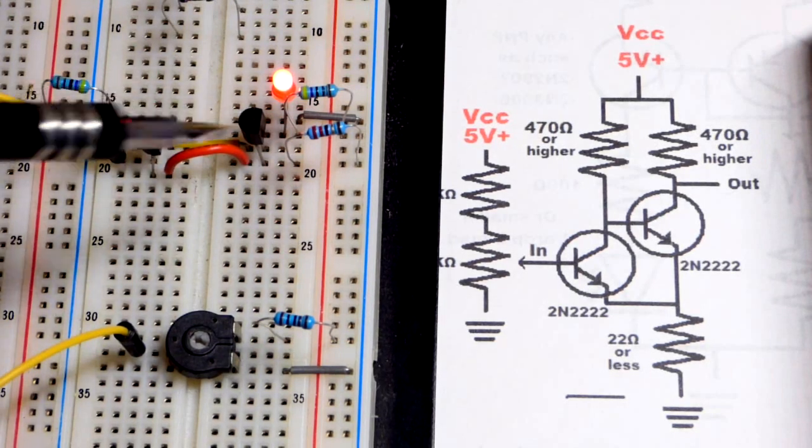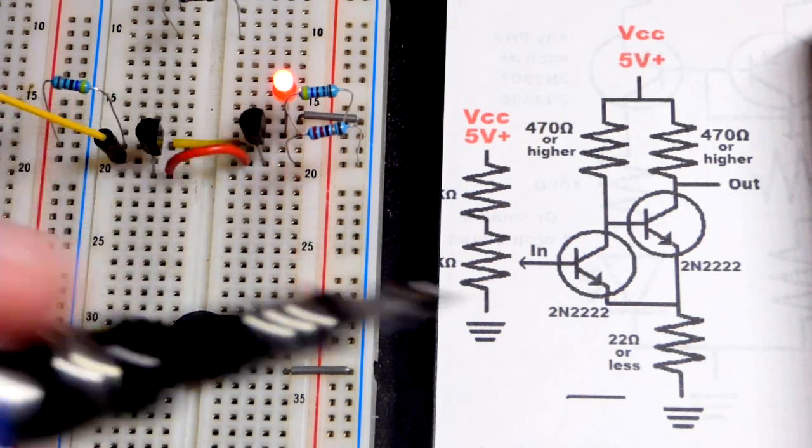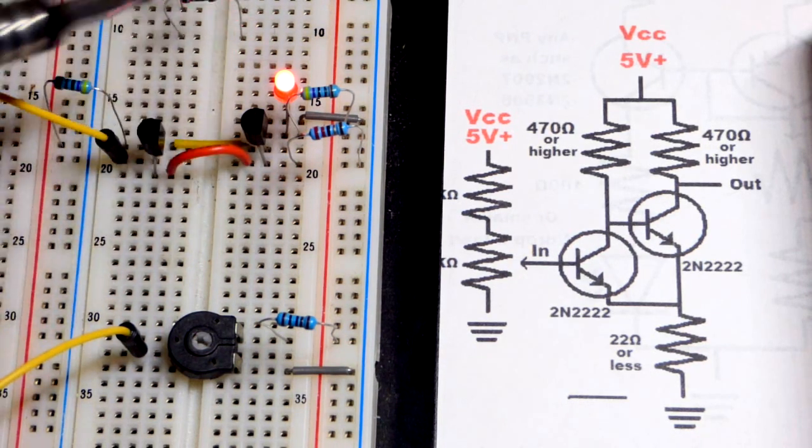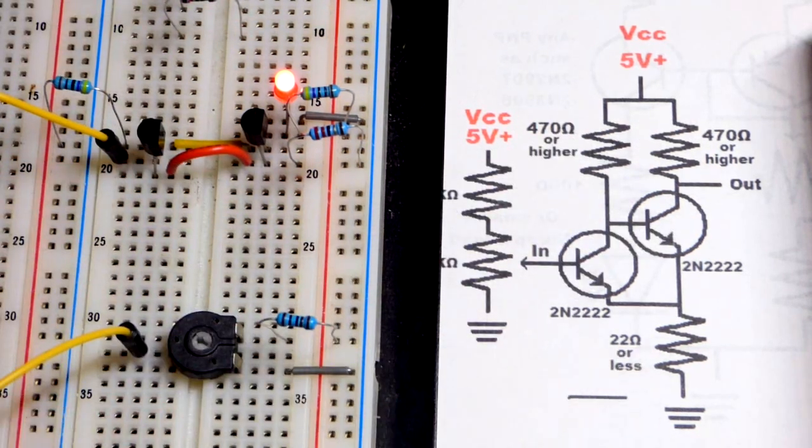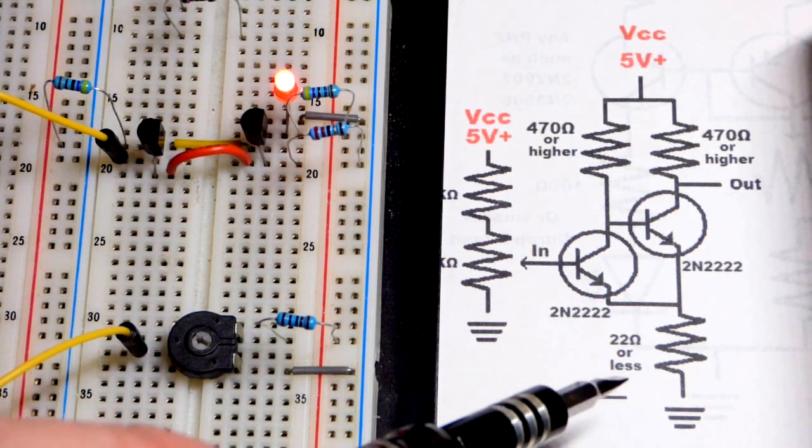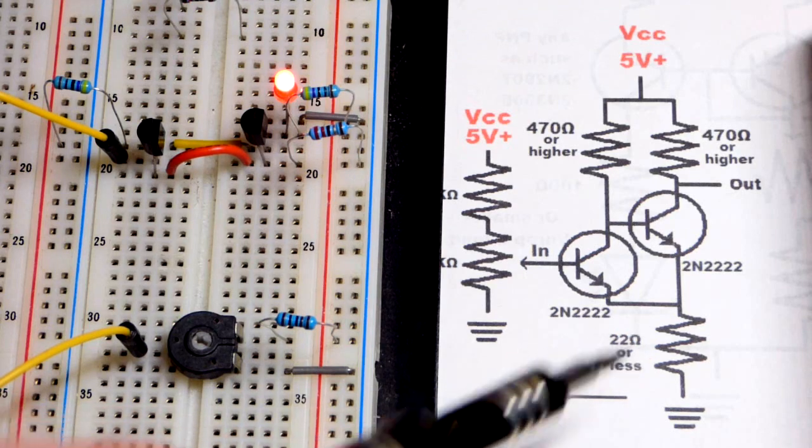So now in this video, we're going to look at making a Schmidt trigger with a couple NPN bipolar junction transistors. The circuit you see here is what is on the schematic. I made this diagram a while ago and I'm going to make some modifications to this.